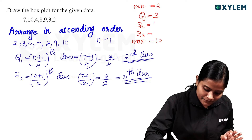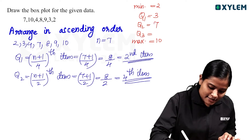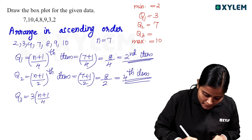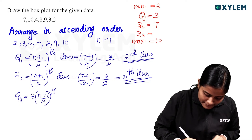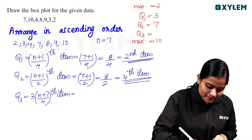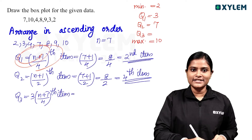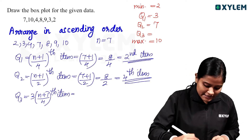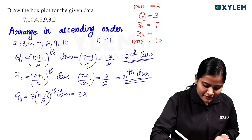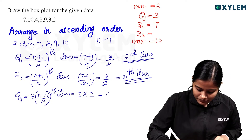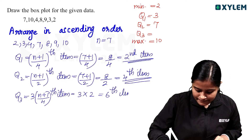Q3 is equal to the 3(n+1)/4 th item. So (n+1)/4 equals 2, and 3 multiplied by 2 equals 6. So Q3 is the 6th item.